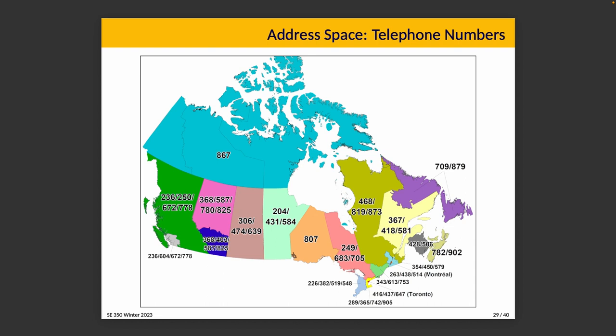When you look at a number like 416-555-1234, it's identifiable as being in the Toronto region by its area code — or at least it's a cell phone registered with that number. There's of course the possibility these days that you could have a number from Ottawa while living in BC, or vice versa. And if you see area code 212, you know it's New York City.